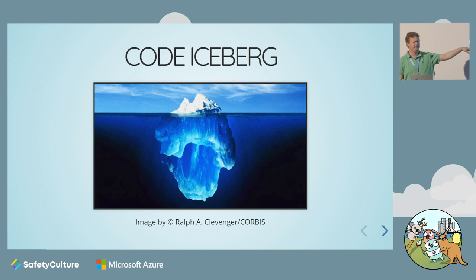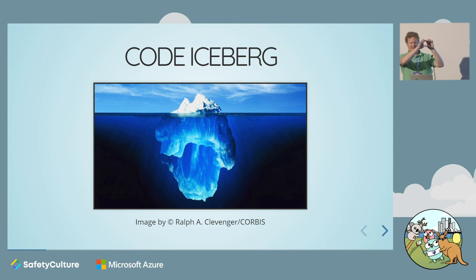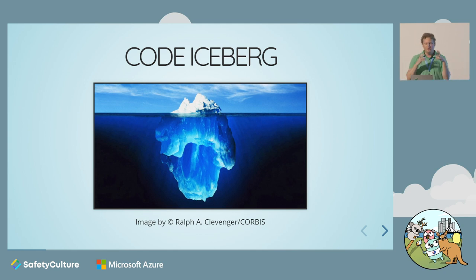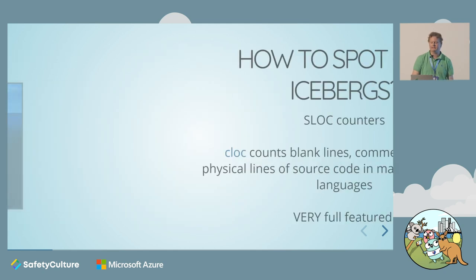I don't know who coined this term. The first I heard of it was Gabriel Weinberg of DuckDuckGo. There's a very thin layer of stuff that you can see at the top and then there's this massive chunk underneath. What you really want to do is find those code icebergs so you can actually estimate correctly.